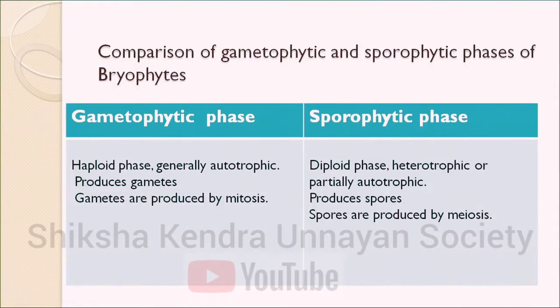Bryophytes are the pioneers of vegetation — they are the first to grow on various habitats like rock, lava, sand and water, and they act as soil binders. Comparing the two phases: the gametophytic phase is haploid, generally autotrophic, and produces gametes by mitosis. The sporophytic phase is diploid, heterotrophic or partially autotrophic, and produces spores by meiosis. The main difference between the two phases is the process of division: mitosis versus meiosis.